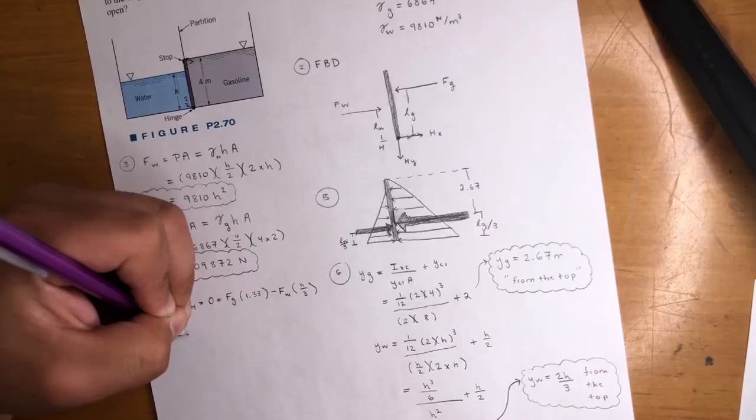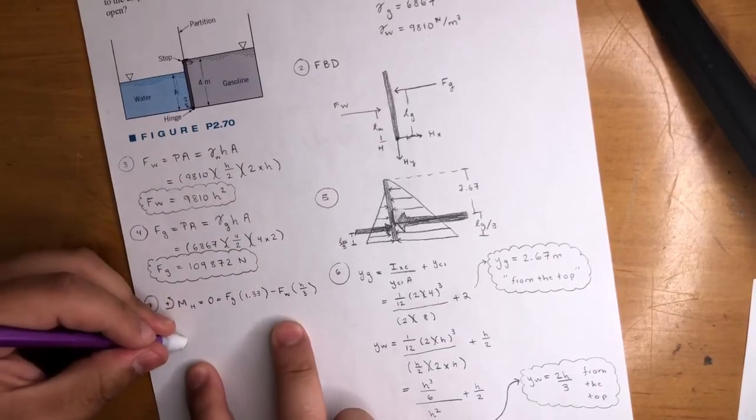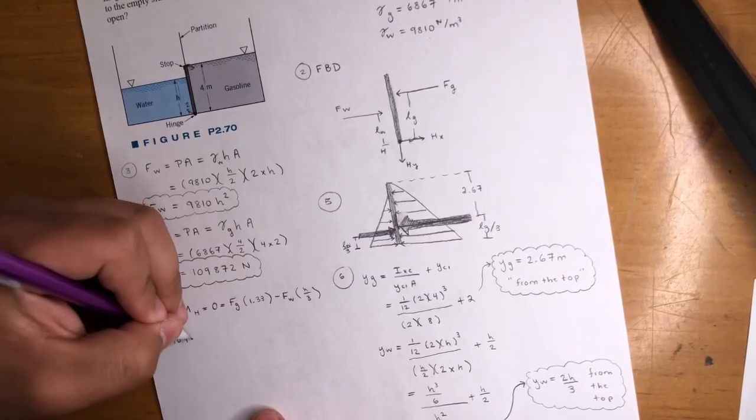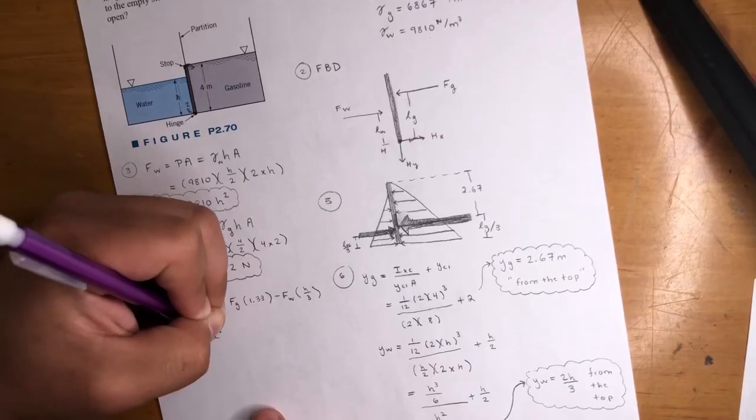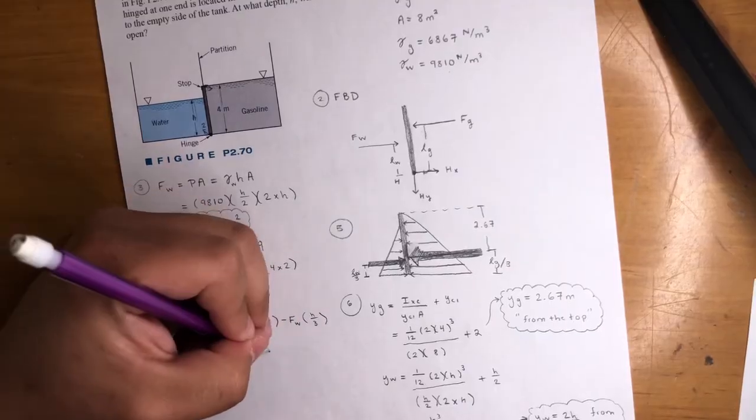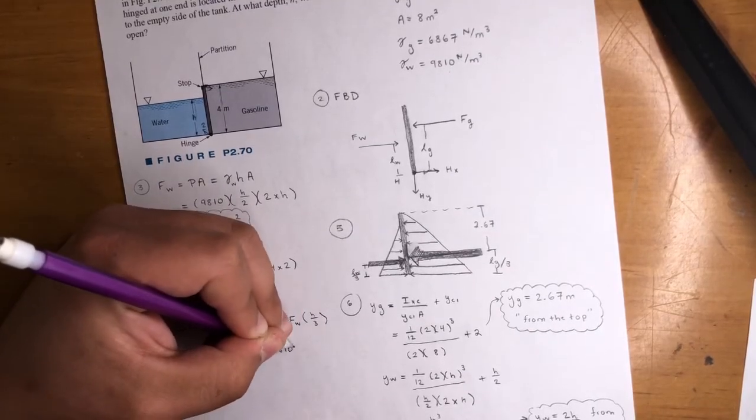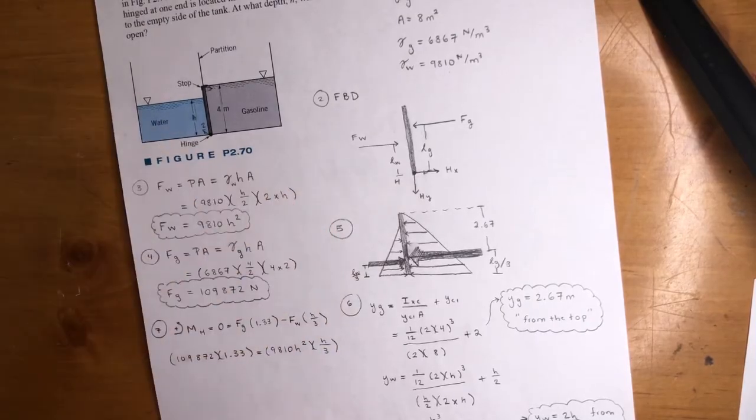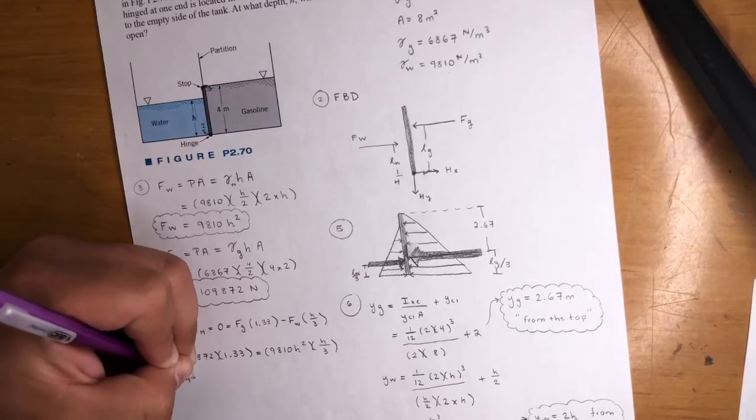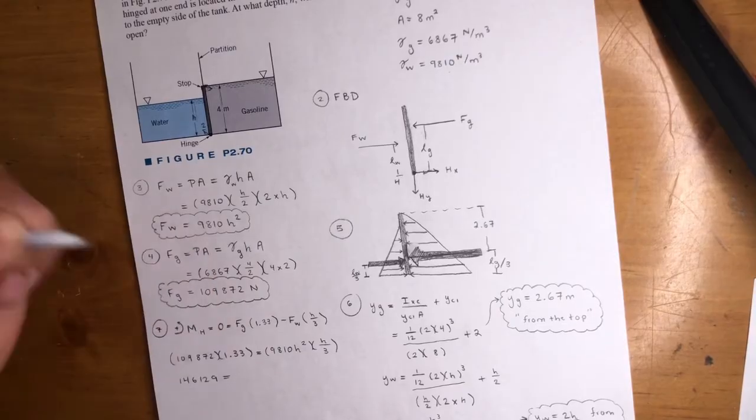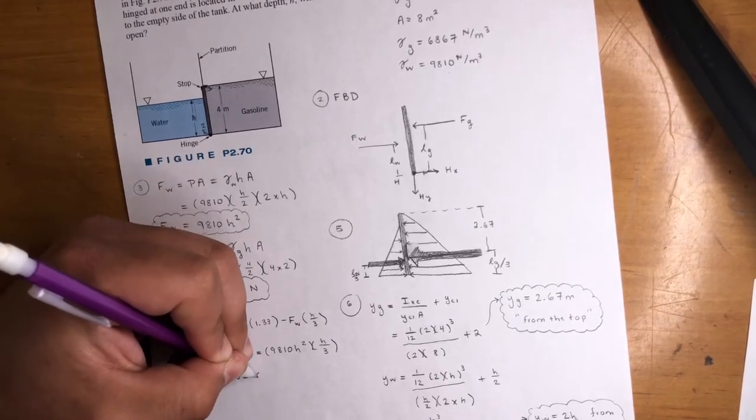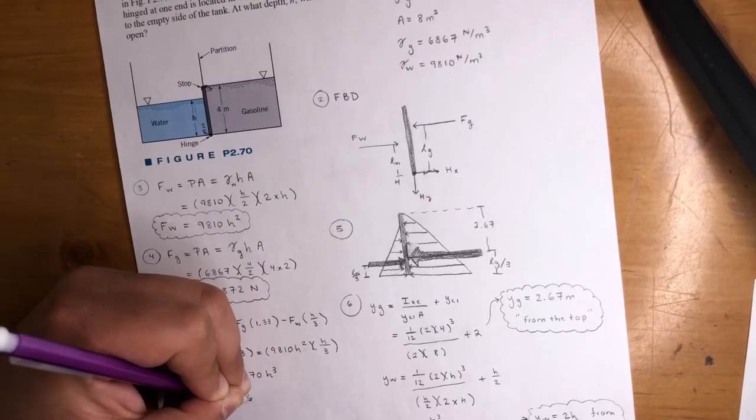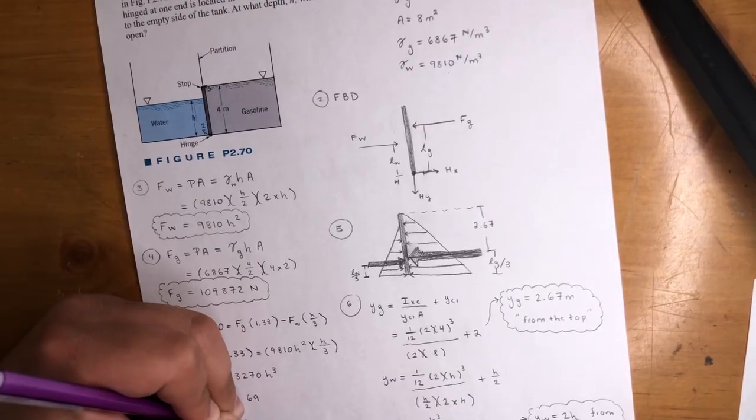Plug in the numbers now. We got... I'm going to go ahead and move this to this side. So I'll get rid of that equal sign, actually. F_G. That is 109,872 times 1.33. And that is equal to water. The force of water, actually. 9810 H squared times H over 3. Okay, cool. So do some math. Got 146,129 is equal to 3270 H cubed. Solve for H. You get H cubed is equal to 44.69. H is equal to 3.5 meters.